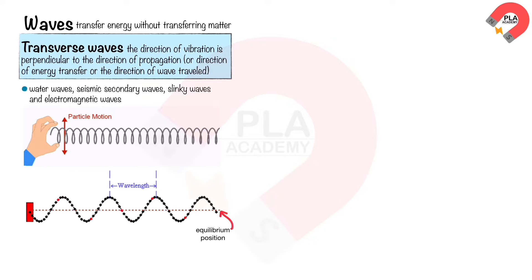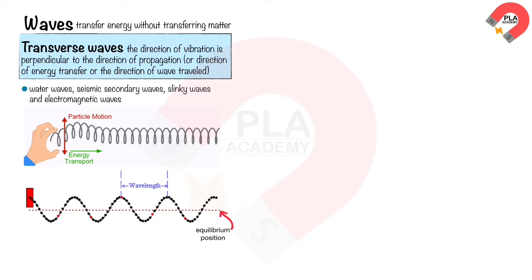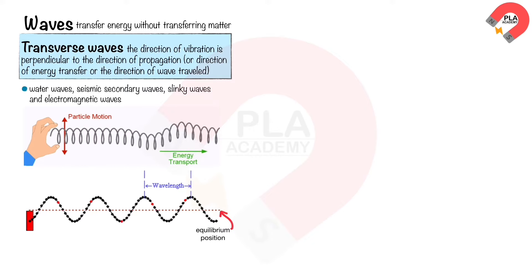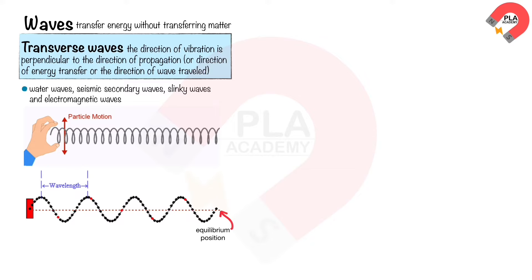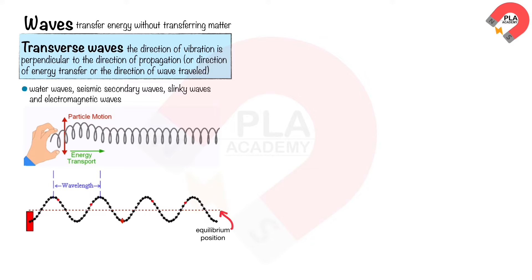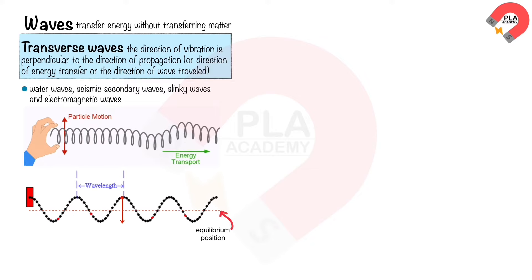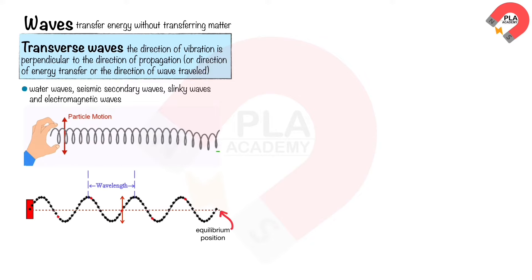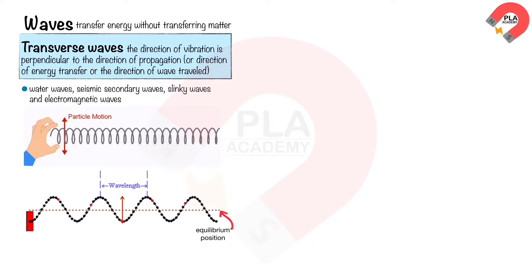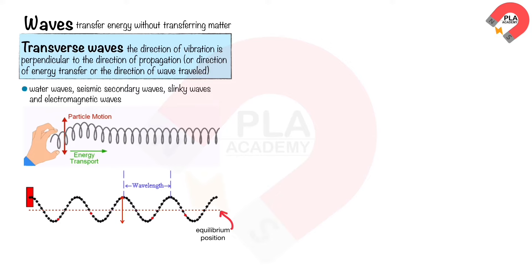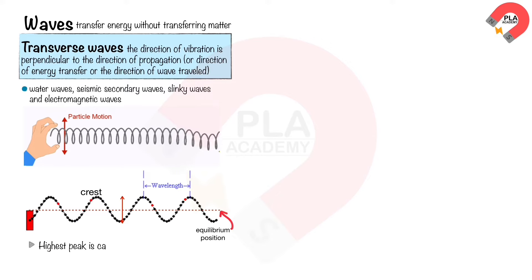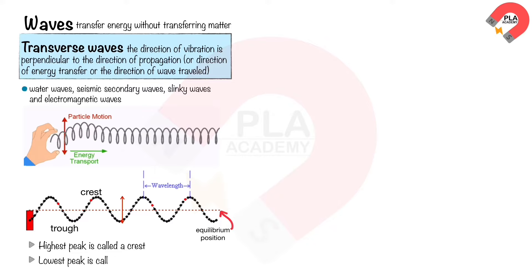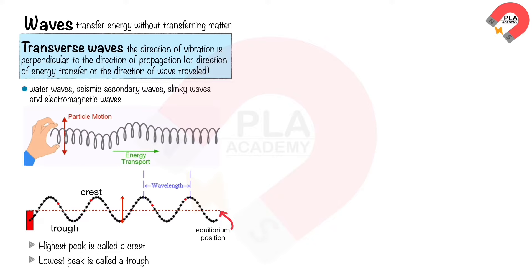This is the equilibrium position. When the wave vibrates for one cycle, it creates one wave that travels one wavelength. The red particle at the red arrow is moving up and down — this shows that the wave transfers energy without transferring matter. The highest peak is called a crest, and the lowest peak is called a trough.